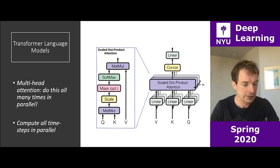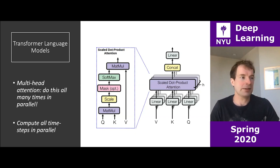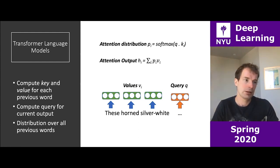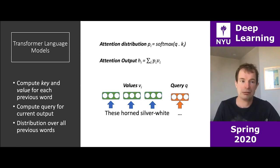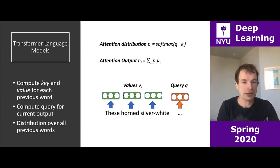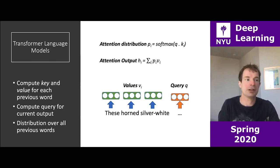The intuition behind multi-headed attention: to predict the next word, you need to know lots of different things simultaneously. For example, if the next word should be 'unicorns' (plural), you need to know both that it's 'horned' and 'silver-white' because the conjunction makes it more likely to be a unicorn. But you also need to know that the determiner was 'these,' not 'a' — if it was 'a horned silver-white,' it would be singular 'unicorn.' The fact that it's 'these' means it should be 'unicorns' plural, for plural agreement. Multi-headed attention lets each word look at multiple previous words simultaneously.